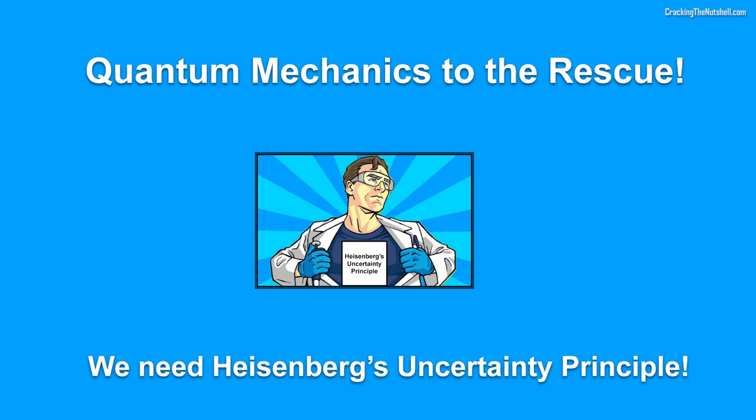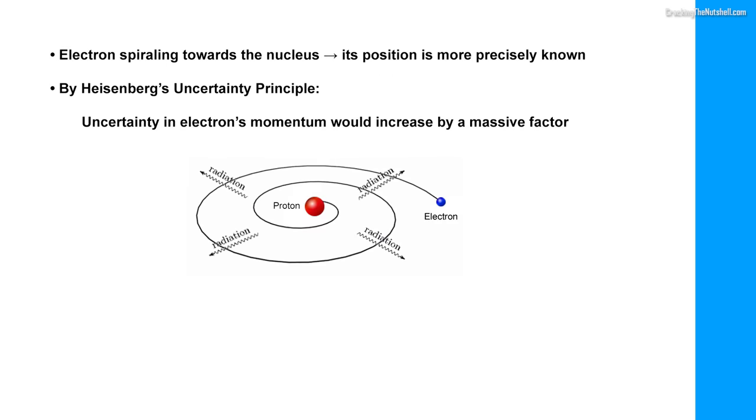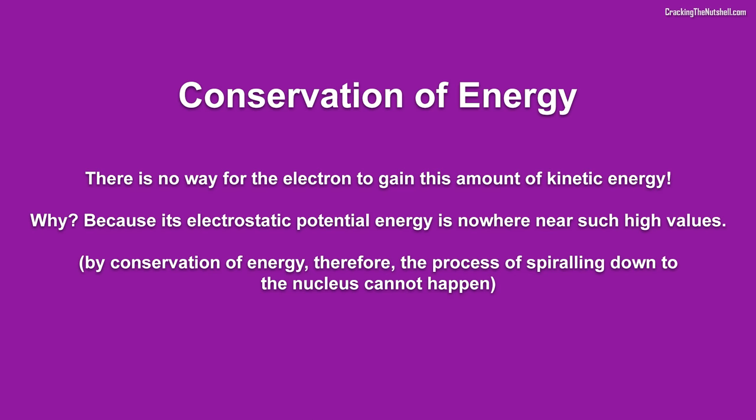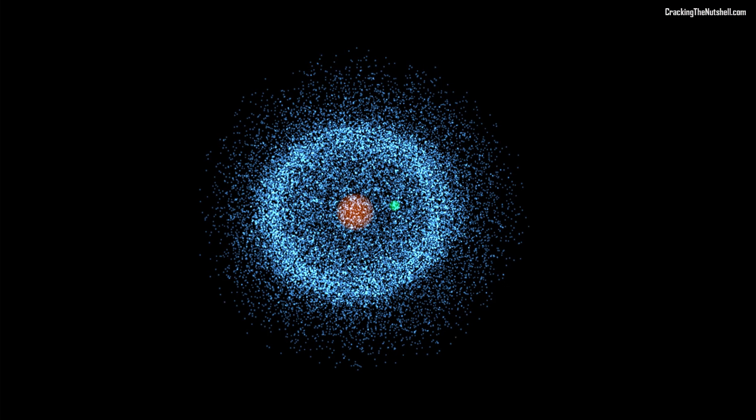However, Heisenberg's uncertainty principle prevents this from happening. Why? Well, if the electron were to spiral in towards the nucleus, its position would become more and more precisely known. To the point where, if the electron was really close to the nucleus, its position would be known with such a precision that, by Heisenberg's uncertainty principle, the uncertainty in the electron's momentum would have to increase by a massive factor, so massive that the electron's kinetic energy would increase by a factor of around 10 to the power of 10. There is no way for the electron to gain this amount of kinetic energy. It is impossible, since its electrostatic potential energy is nowhere near such high values. And by conservation of energy, therefore, this cannot happen. And this is how Heisenberg's uncertainty principle explains why the hydrogen atom is the size it is and the fact that it is stable.